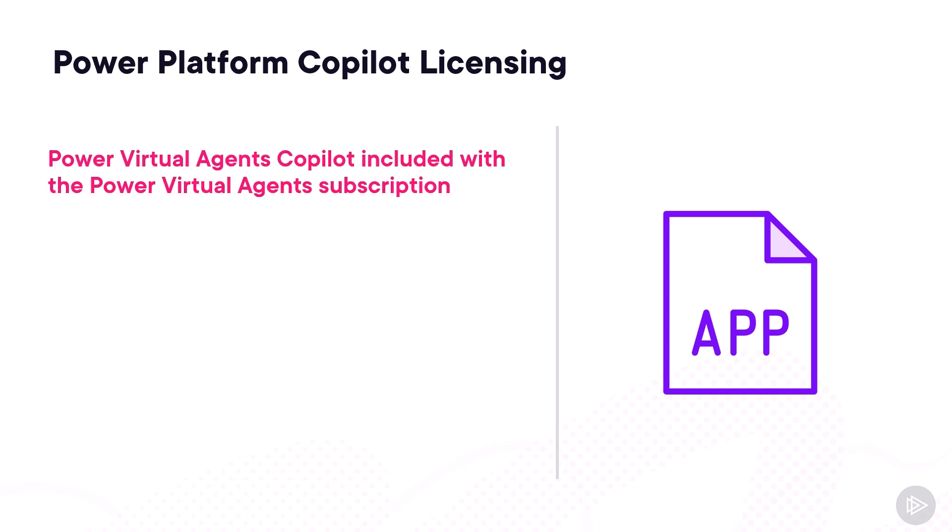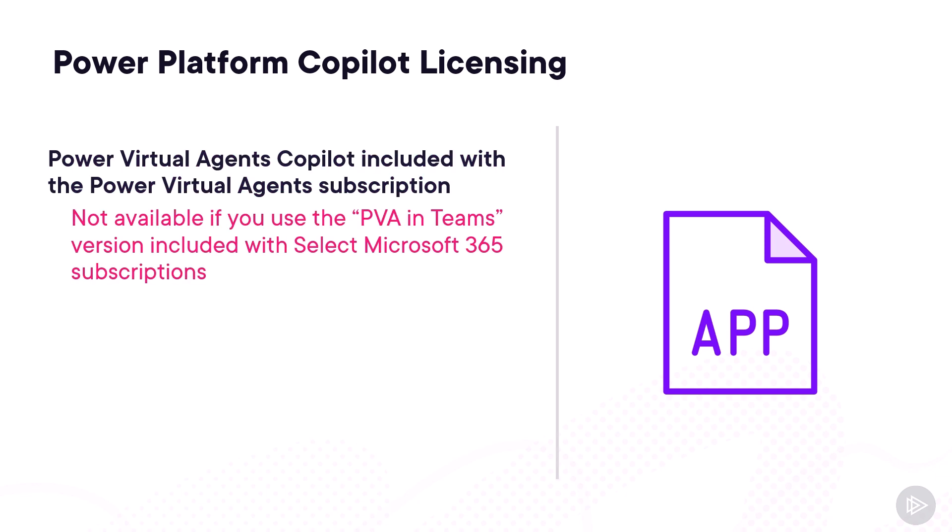Let's start with Power Platform Copilot licensing. The Power Virtual Agents Copilot is included with the Power Virtual Agents subscription, so as long as you use the paid version, you will have the Copilot in there. However, it is not included if you use the Power Virtual Agents in Teams plan, which is included with certain Microsoft 365 subscriptions. You really need to have that paid Power Virtual Agents license.